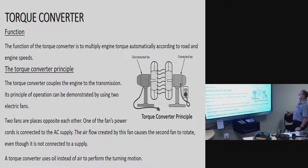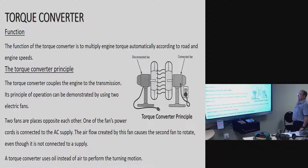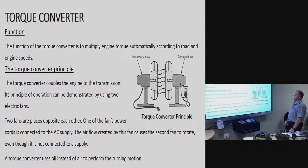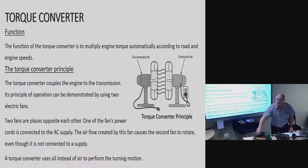The torque converter's principle of operation can be demonstrated using two electric fans placed opposite each other. One fan is connected to the AC supply — you plug it in and switch it on. The airflow created by this fan causes the second fan to rotate, even though it is not connected to the power supply. So basically, with both fans facing each other, the one you plug in causes the other one to start turning.